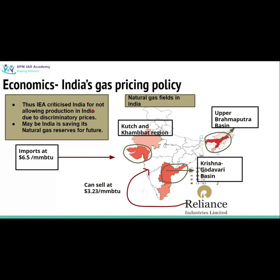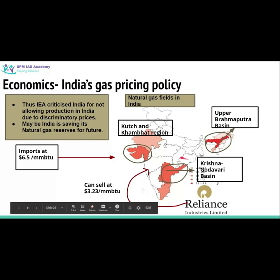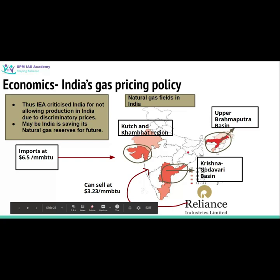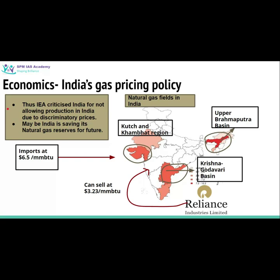The IEA has criticized India for not allowing production due to discriminatory prices. The exact reason for this policy has not been officially stated by the Indian government, but it can be assumed that India is conserving its natural gas reserves for future use. The strategy may be to discourage excessive current production by offering lower market prices, so that when the rest of the world's natural gas reserves begin to deplete, India will still have reserves to utilize.